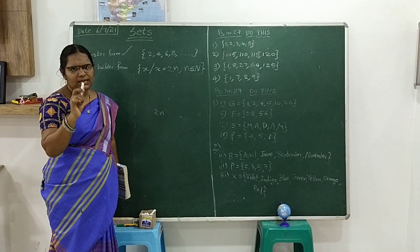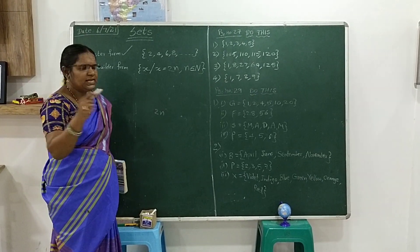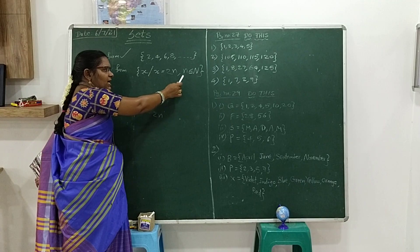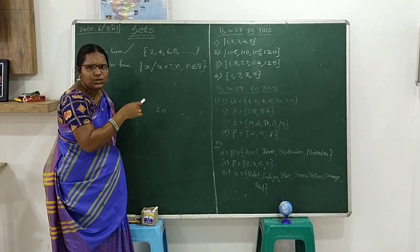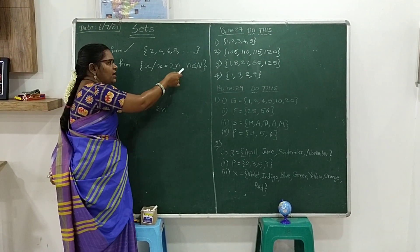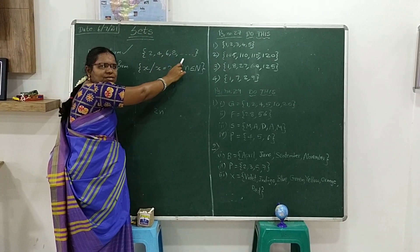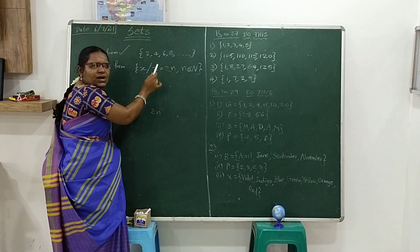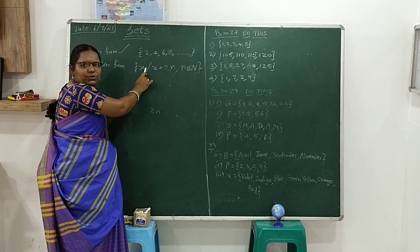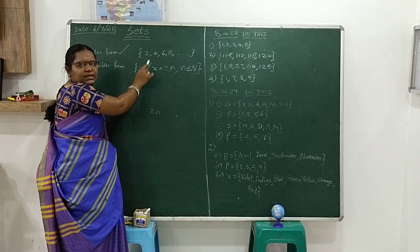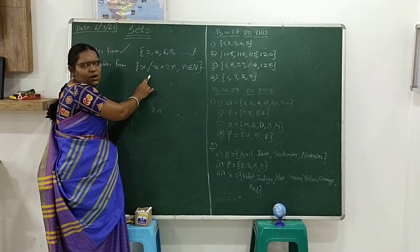So with 2n: when n=1 we get 2, when n=2 we get 4, when n=3 we get 6, and so on. We are writing the same set using a variable. This is called set builder form, and the direct listing with commas is called roster form.